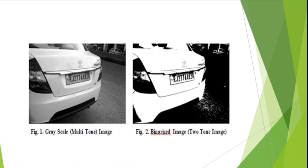Here we have an image in which we can see the difference. This is in the form of a grayscale, that is a multi-tone image, and its range is from 0 to 256. And this is in the form of Binarization, having only two colors: white and black.